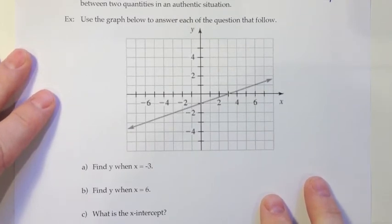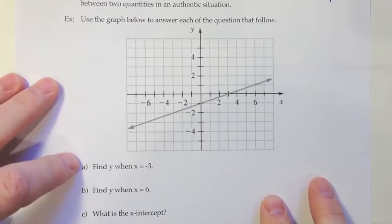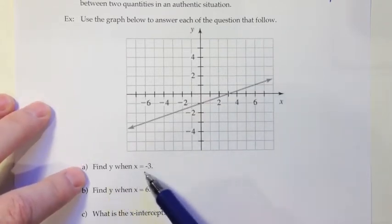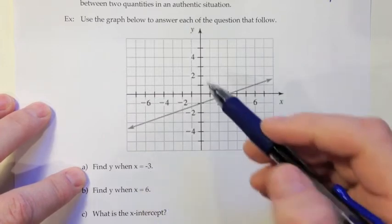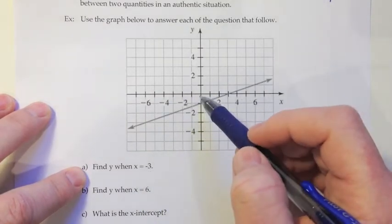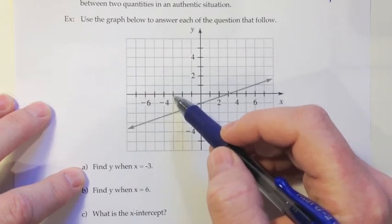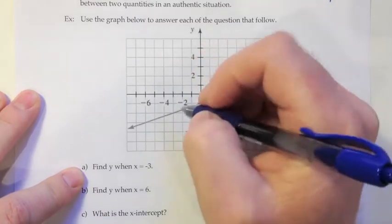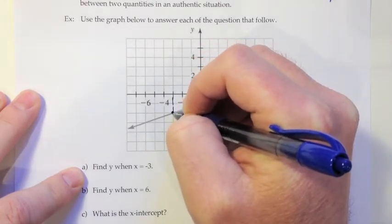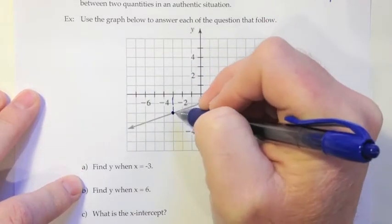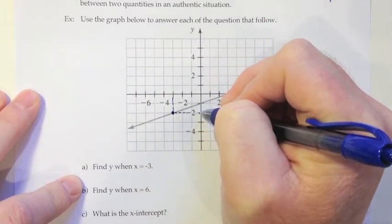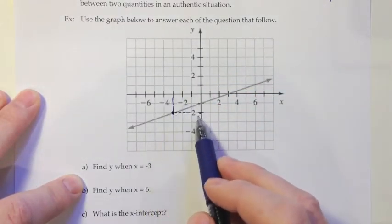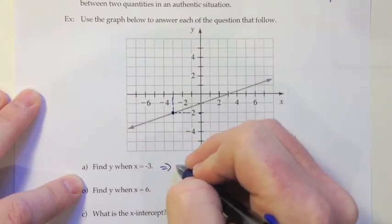Use the graph below to answer each of the questions that follow. They've shown us a linear model or a line here. They want to know what is the y value when x is negative 3. So the way you find that is you go on your x-axis and you count over 1, 2, 3 to get to the negative 3 side. Then you move either straight up or straight down to hit your model. In this case that would be down. So we drop down until we hit that point. They want to know what is the y value. So then I would go across and see how far down is that. It looks like that's two units down. So it looks like when x is negative 3, the y value is negative 2.